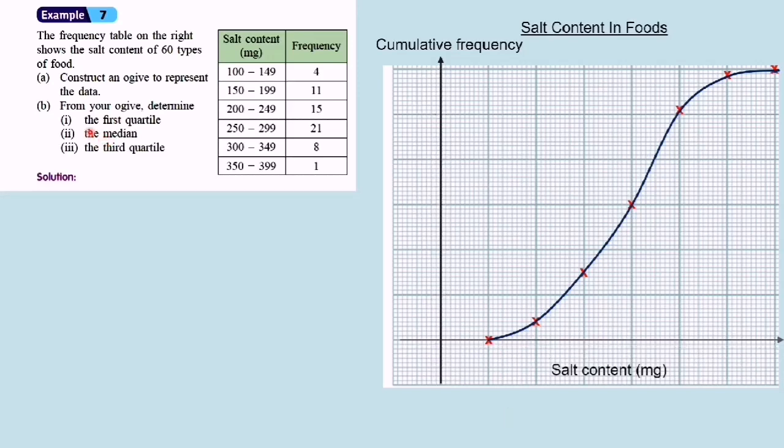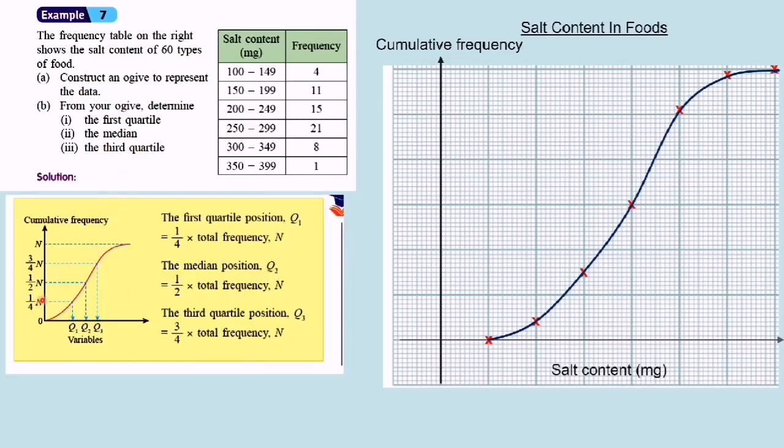Before we find the value of the first quartile, the median, and third quartile from the ogive, let us look at this diagram. Quartiles are values that divide a set of data into 4 equal parts. So this is the first quartile, which is 1 over 4 of the graph. Second quartile, we call it the median. Third quartile is 3 over 4 of the graph or 75% of the data.